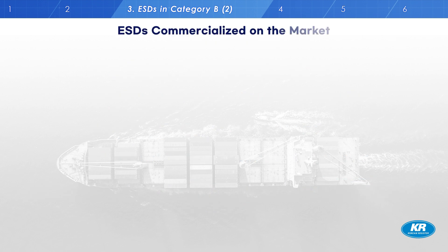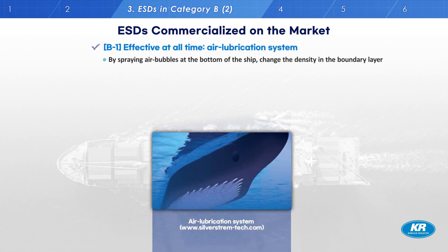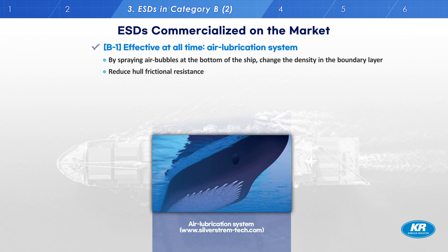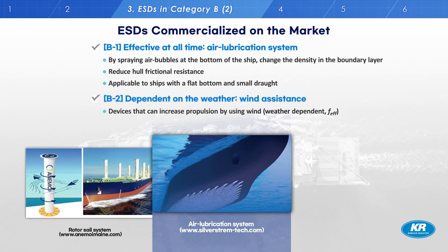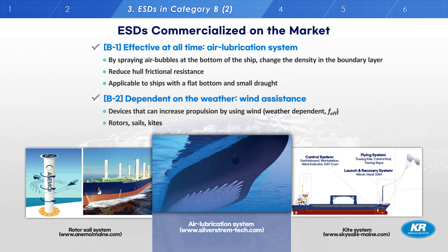Examples of Category B ESDs commercialized on the market are an air lubrication system and a wind assistance system. The air lubrication system sprays air bubbles at the bottom of the ship, which changes the fluid density in the boundary layer, thereby reducing the frictional resistance. This device is applicable only to ships with a flat bottom and small draught, because it is effective only when the bubble sheet is continuously maintained at the hull bottom. A wind assistance system increases propulsion power by using wind — for example, rotors, sails, and kites. The effectiveness of any wind assistance system is dependent on environmental conditions, so the weather effect is also included in the EEXI formula as F-effective.